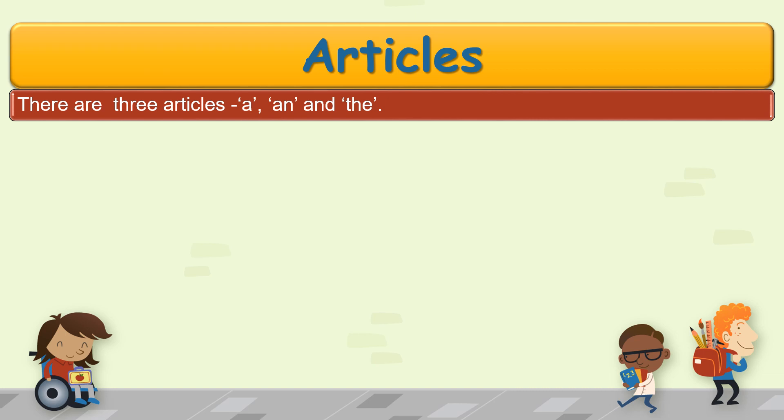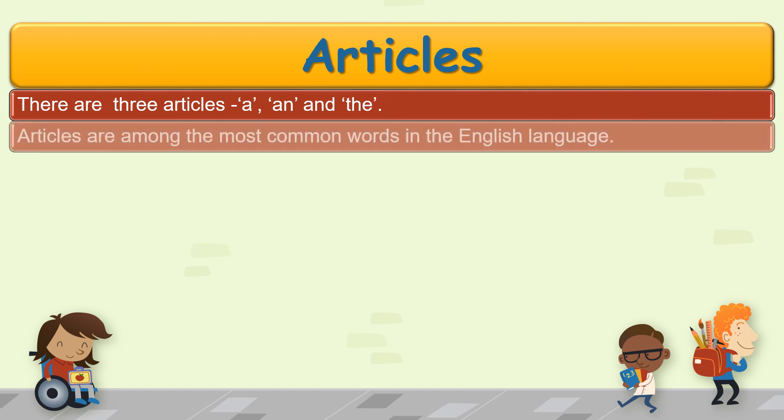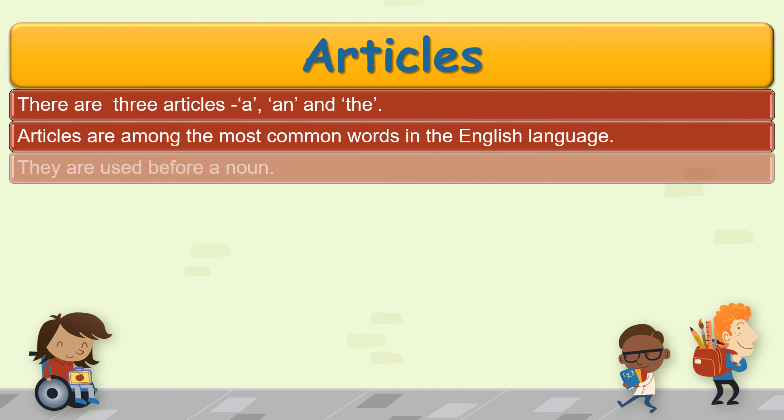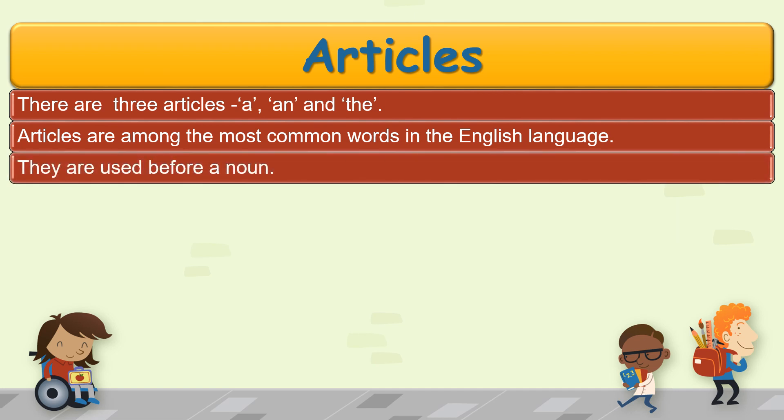A, an, and the are the three articles, and these are the most commonly used words in the English language. They are used before a noun. Now let me explain you in detail about them.